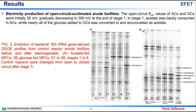Electricity production of open-circuit acclimated anode biofilms: The open-circuit anode potential values of acetate-fed and glucose-fed control reactors were initially 50 mV, gradually decreasing to 300 mV at the end of stage 1. In stage 1, acetate was barely consumed in acetate-fed control reactors, while nearly all of the glucose added to glucose-fed control reactors was converted to accumulated products.